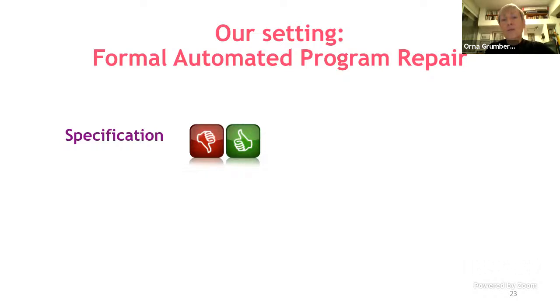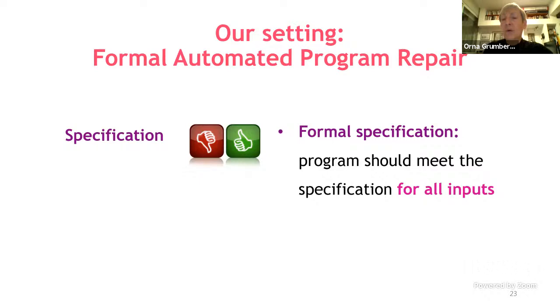The must-fault localization set is a set of locations that contains at least one location from any successful repair to the bug. This means it is impossible to fix the bug using only locations outside this set — any repair for this specific bug must use at least one location from this set. The must notion depends on the chosen repair scheme and we match our must-fault localization to SMUTE. Our setting is formal automated program repair: we have a specification and the program is supposed to satisfy it for all inputs, though we restrict ourselves to bounded verification, which is very common in program verification.